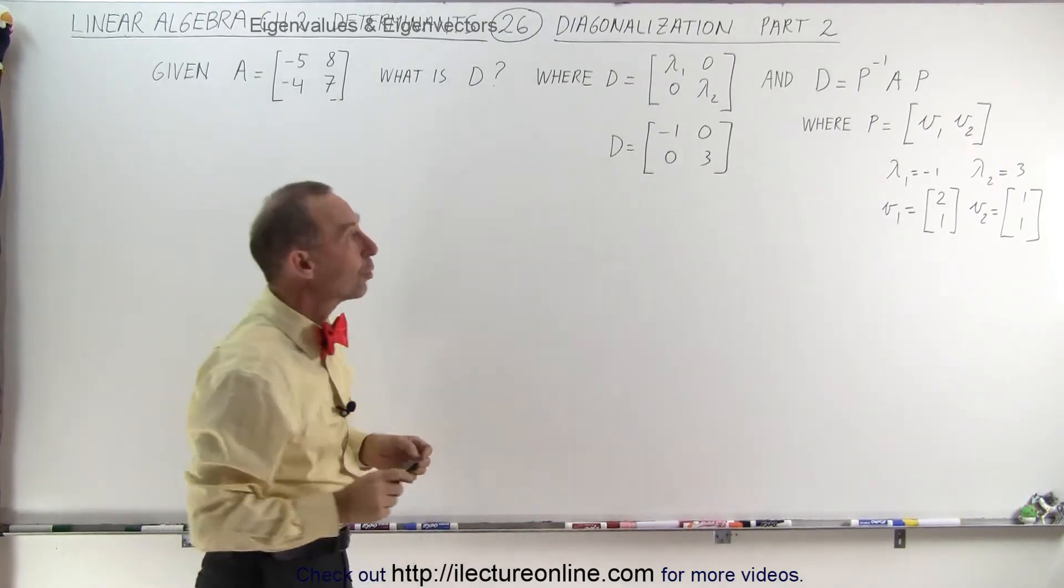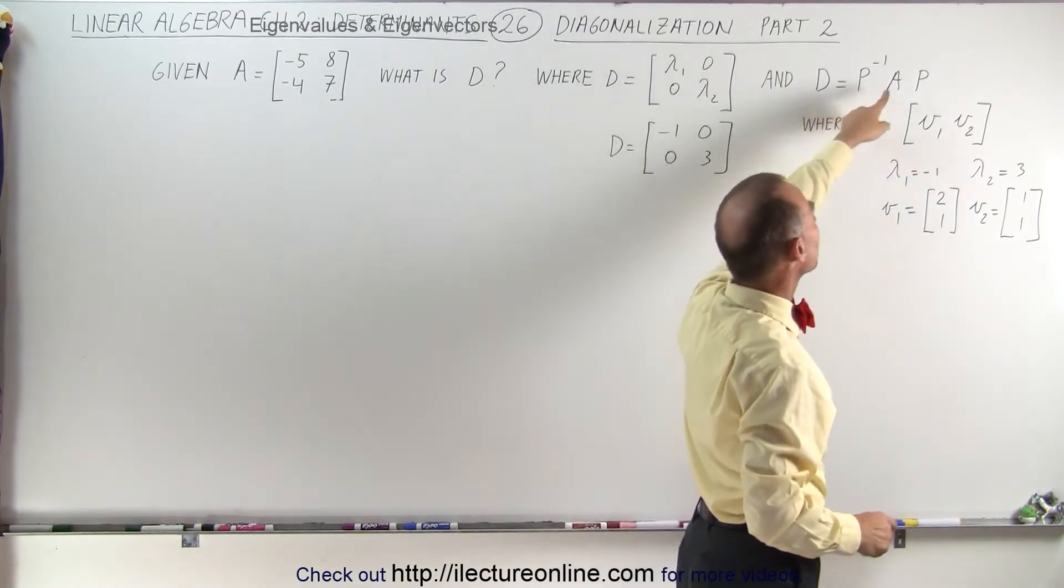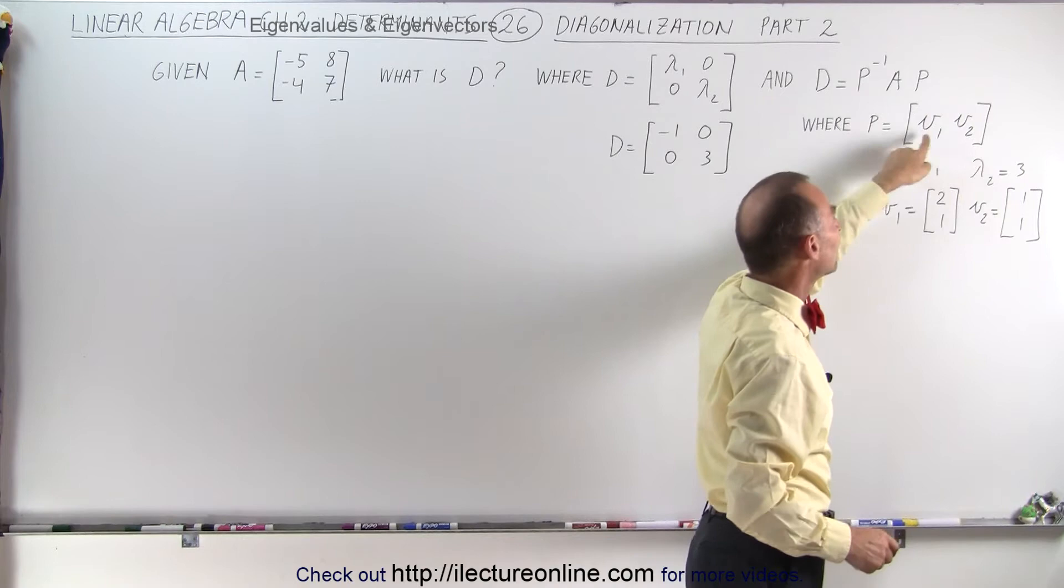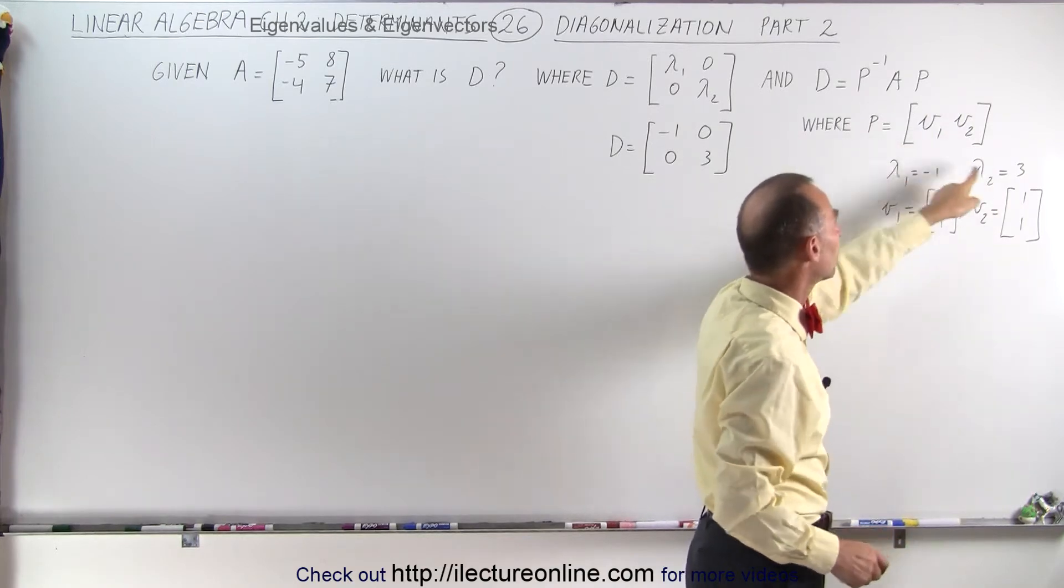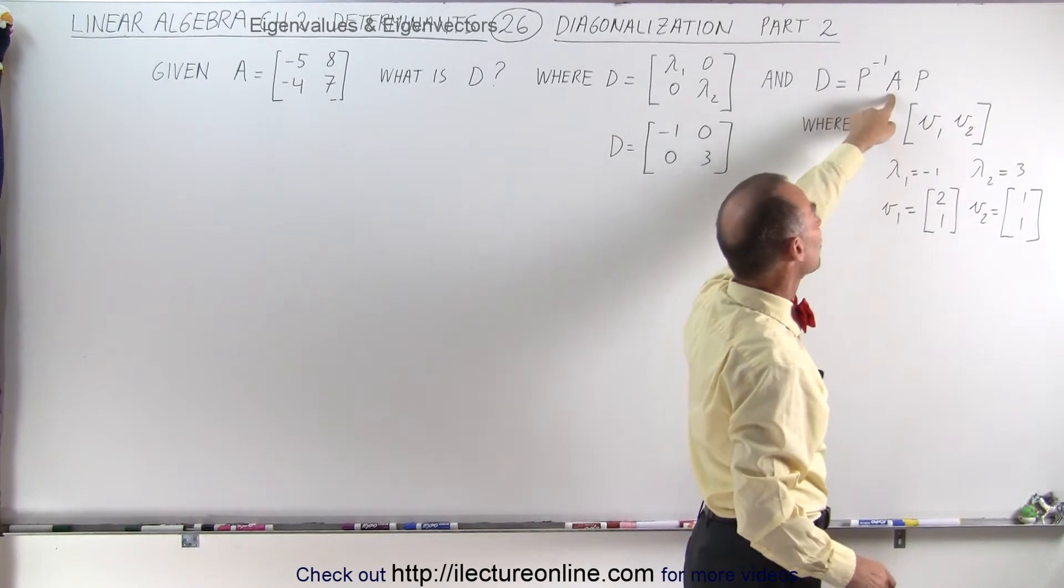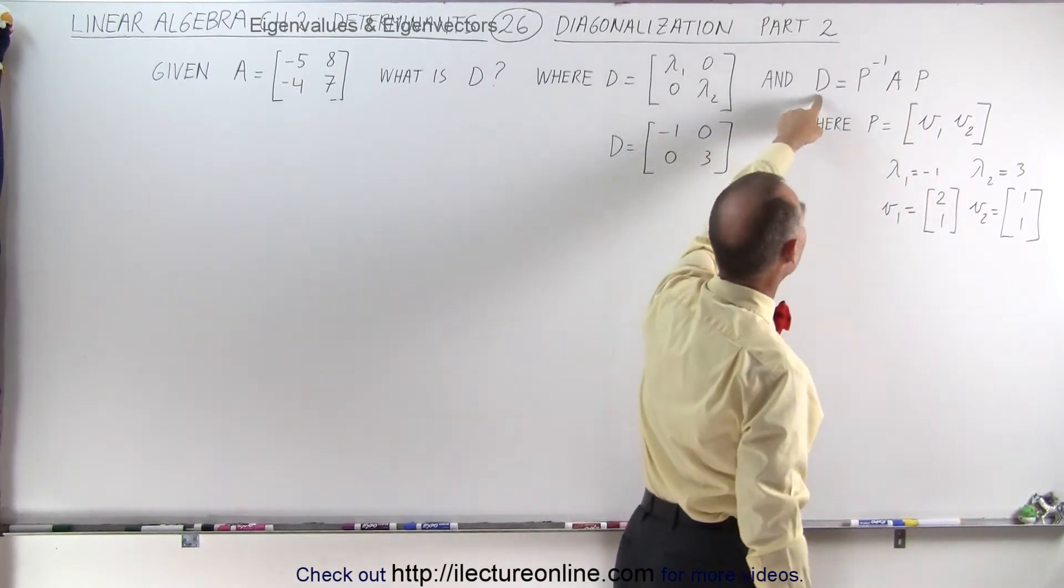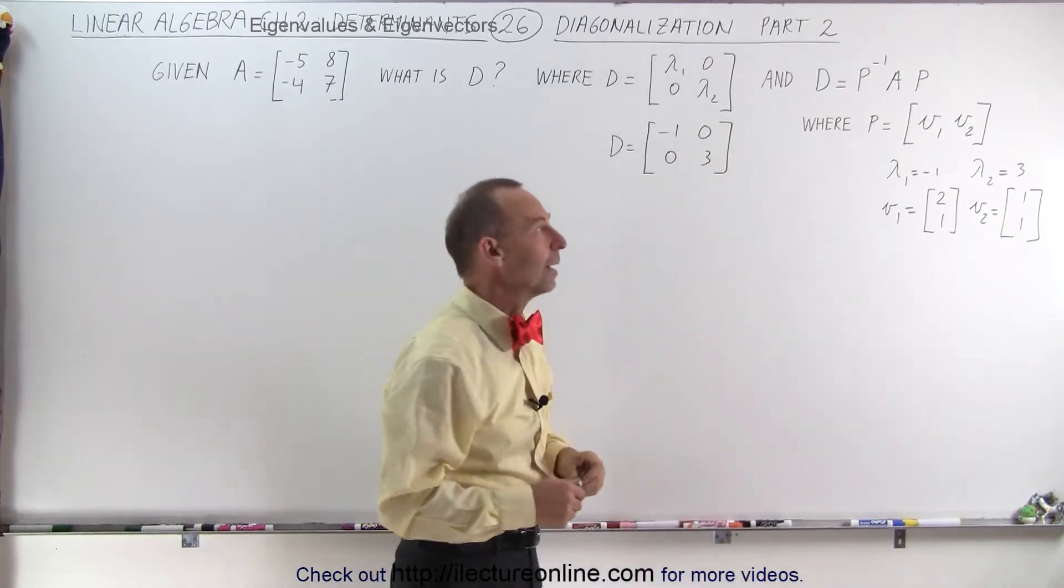But we also showed you that you can find the diagonalized matrix by taking the P matrix which is made up of the eigenvectors corresponding to the eigenvalues. You find the inverse P matrix, you multiply that times the A matrix, the original A matrix, and you can also find the diagonalized matrix. And we're going to show you that now.